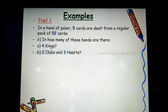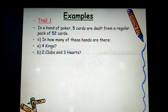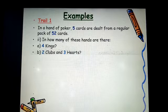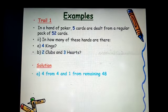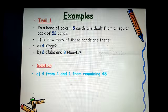Give us a try. Now, in a hand of poker, 5 cards are dealt from a regular pack of 52 cards. In how many of these hands are there? For part A, 4 kings. Now, how many kings do we have in a pack? We have 4 kings.